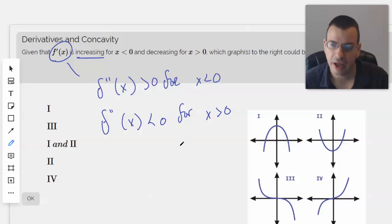So f double prime of x is greater than 0 for x less than 0, and f double prime of x is less than 0 for x greater than 0. So it's right here, number 3.